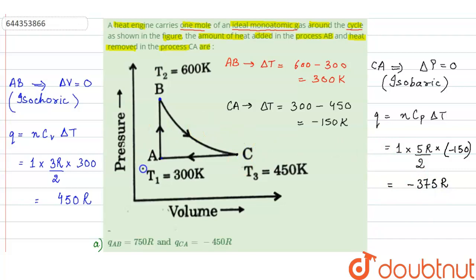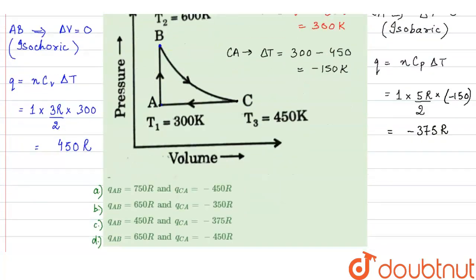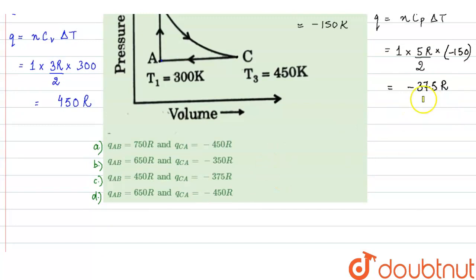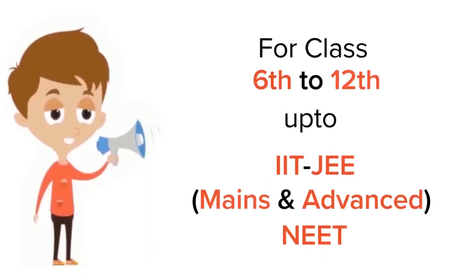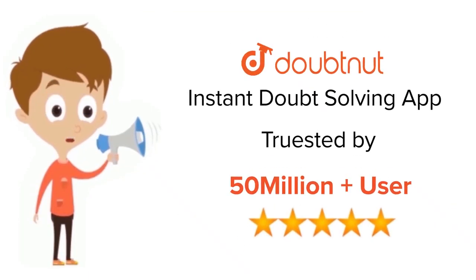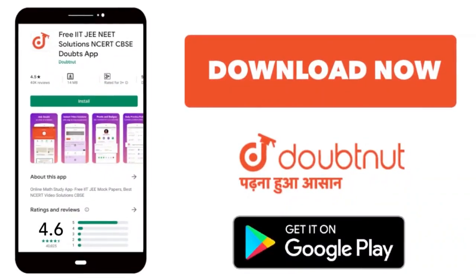So for the AB process we have Q_AB equals 450R, and for the CA process we have Q_CA equals minus 375R. This matches option C, so option C is the correct answer. For class 6 to 12, IIT JEE, and NEET level — trusted by more than five crore students — download DoubtNet today.